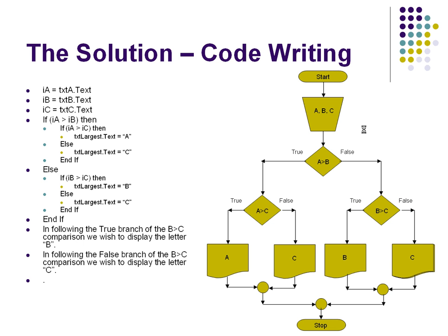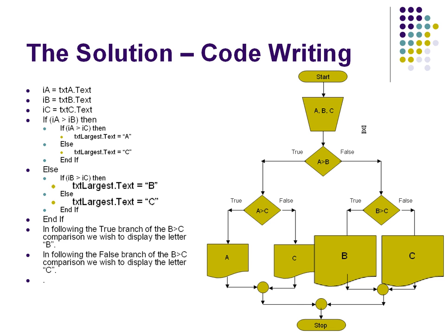Again, the output's very similar. If it's true, B is going to be the winner. Therefore, largest B gets the text. If C is the winner, then the else part of that statement. Largest.text equals C.